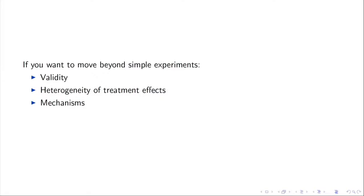If we want to design more interesting experiments, there are three ideas from social science that are very helpful: validity, heterogeneity of treatment effects, and mechanisms. I want to walk through each of these briefly — you've probably heard all of them before.